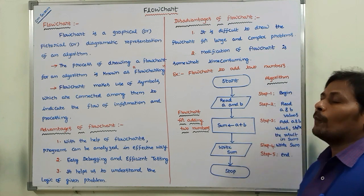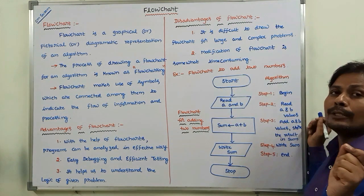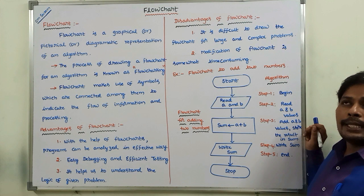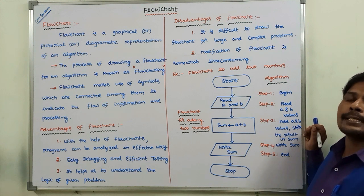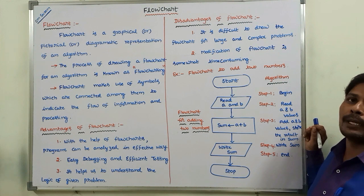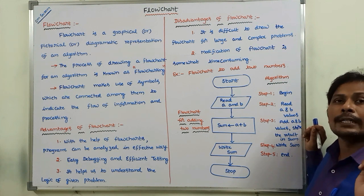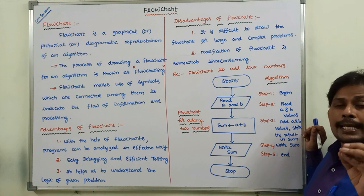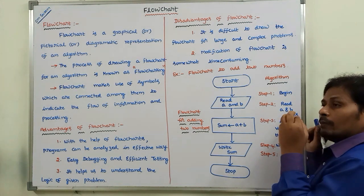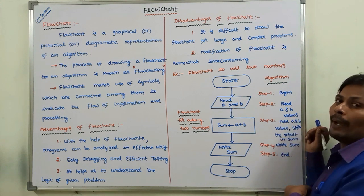Suppose we are taking one problem — the problem is adding two numbers. A variable A contains one number, variable B contains the second number. We are adding the values of A and B. This is our problem. So now, these problems can be solved in a step-by-step manner.